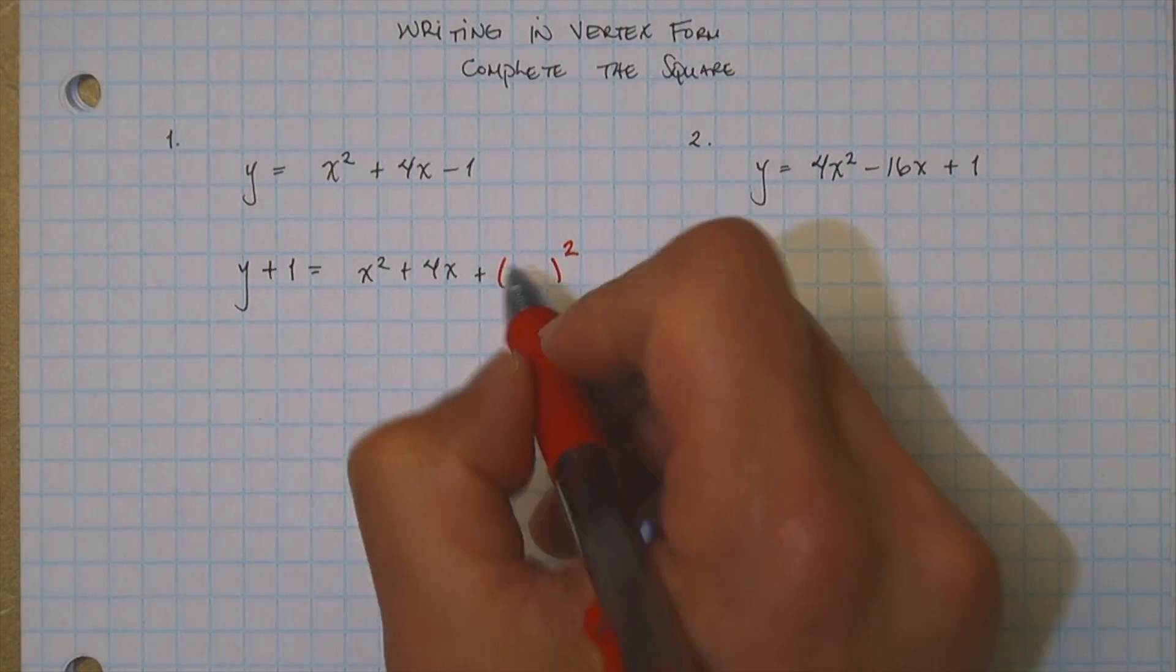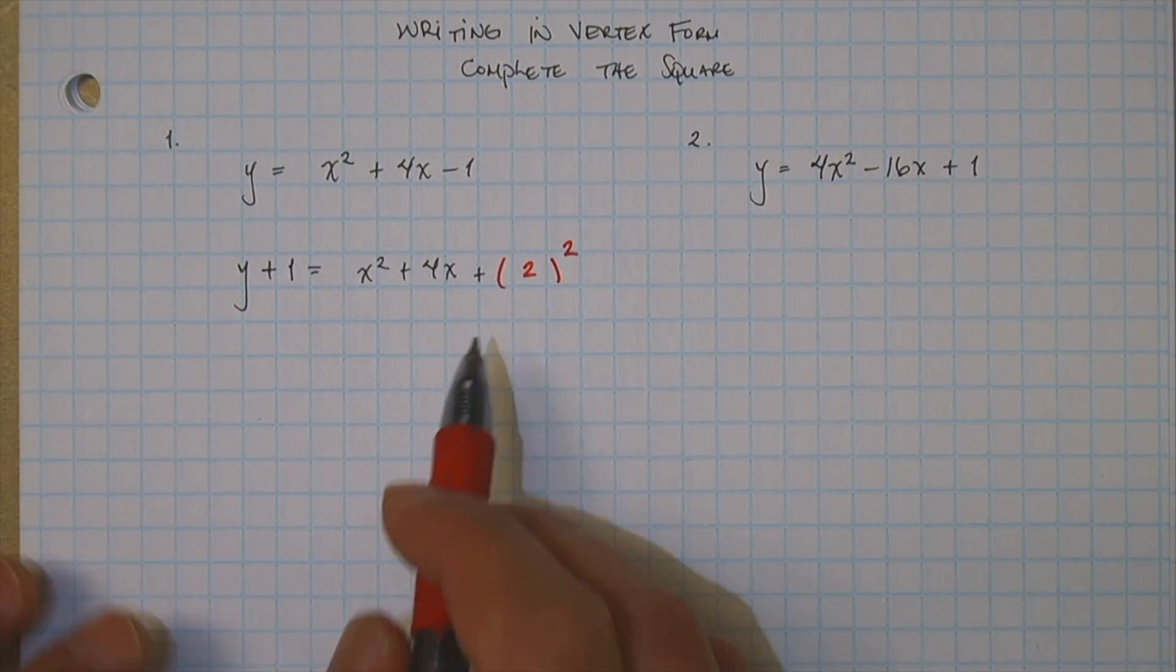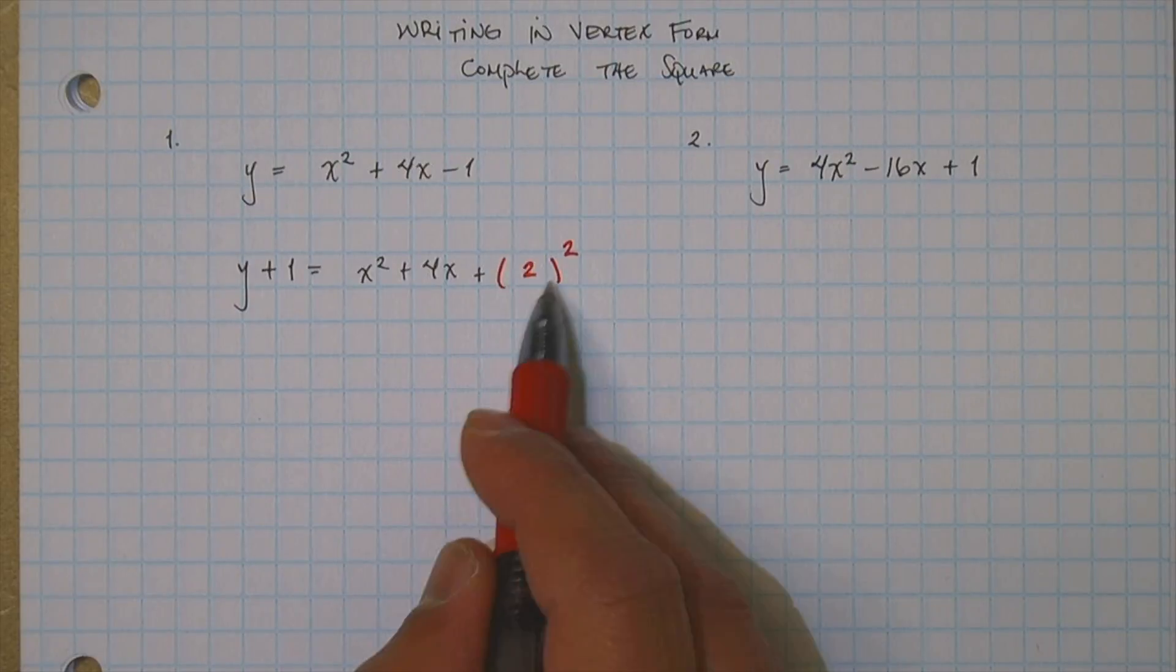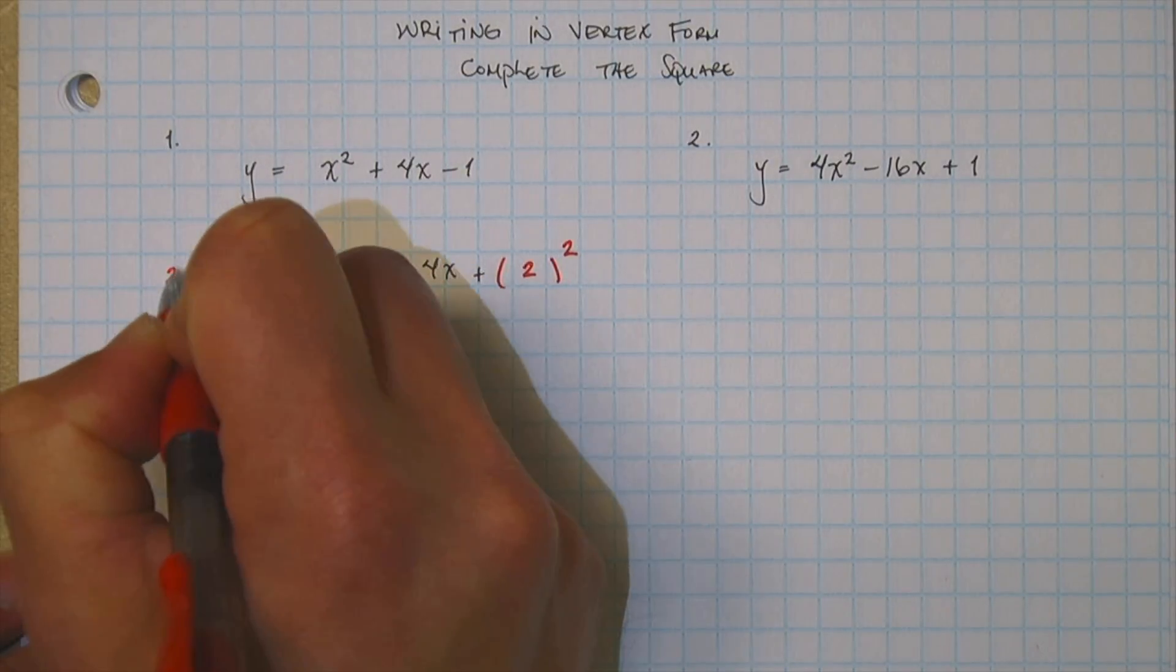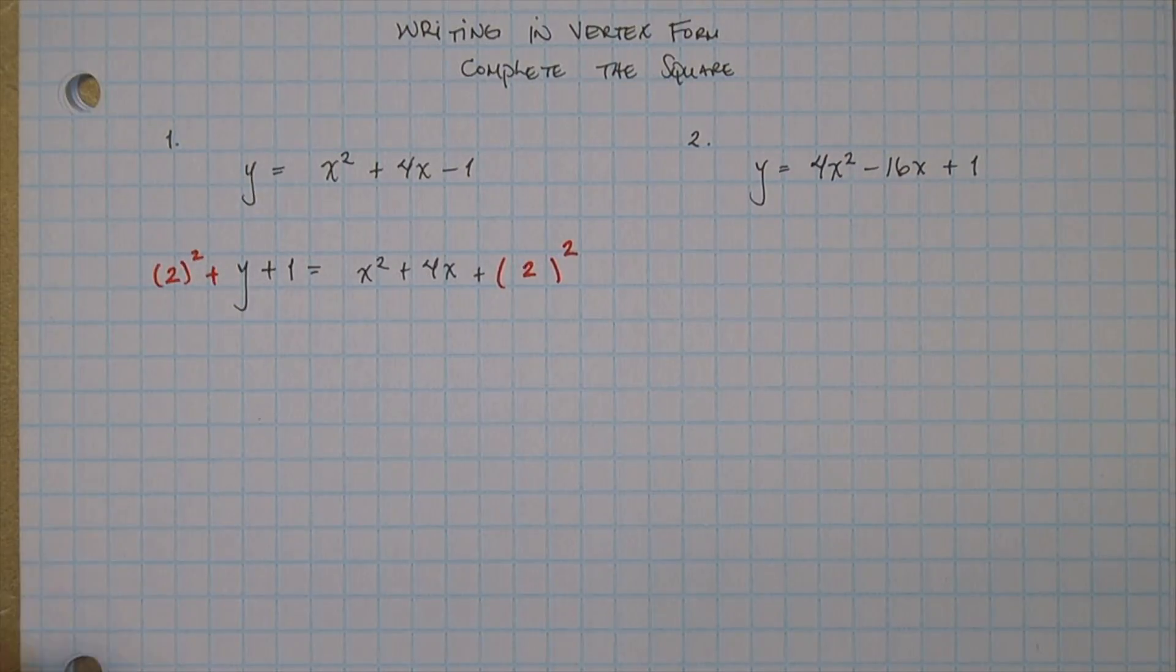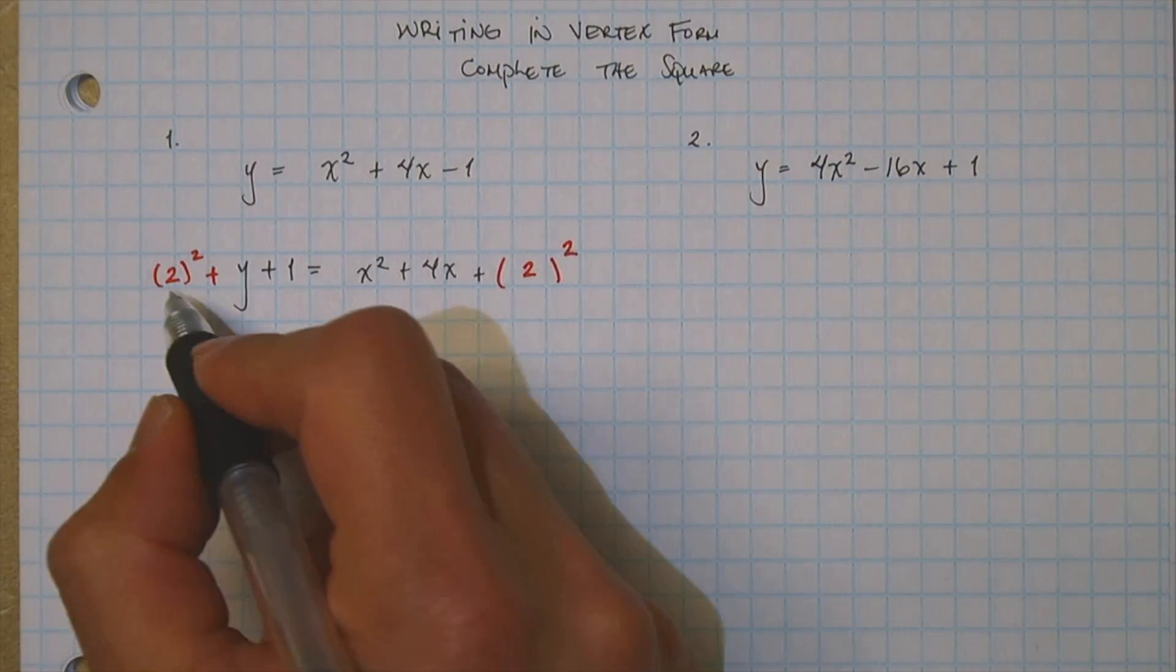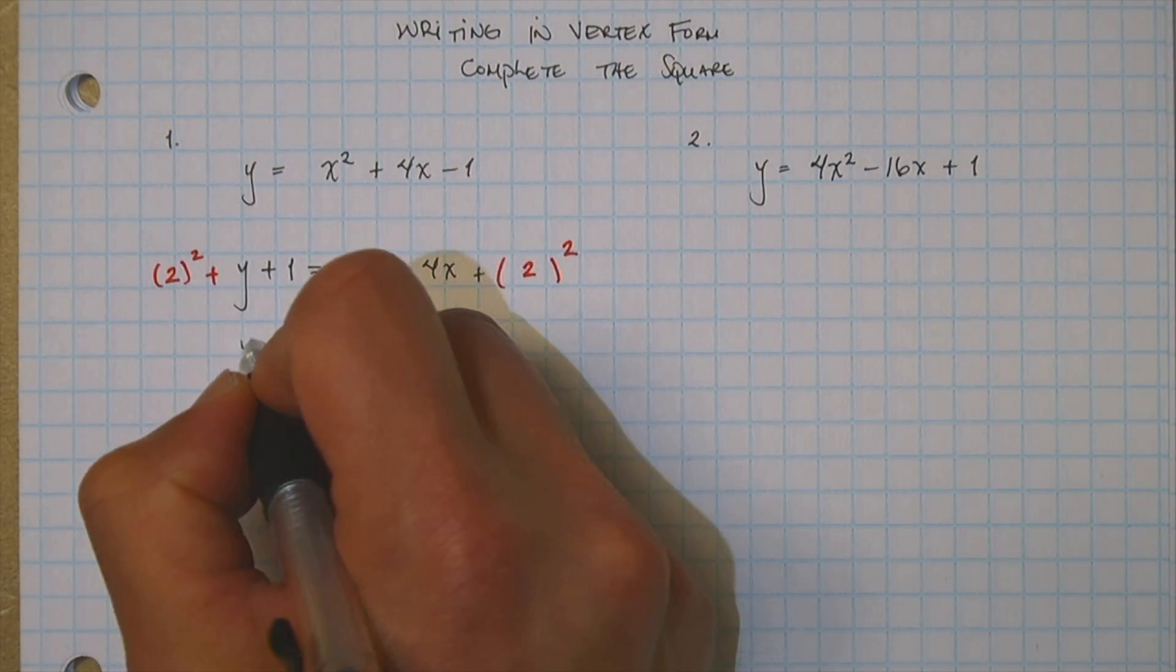I'm going to take half of the 4 and that's going to be 2. Now if you notice half of whatever I add on the right I have to add on the left. So over here I'm going to add the same thing. Well what does that do? Well this guy becomes 4 plus 1, that's going to give me 5.